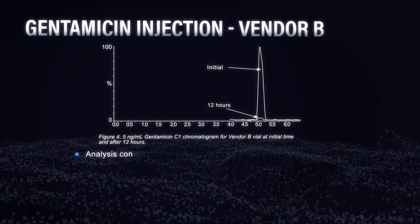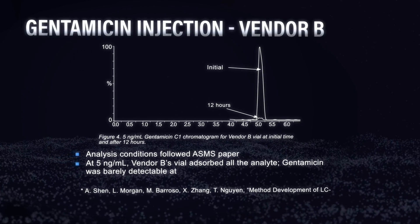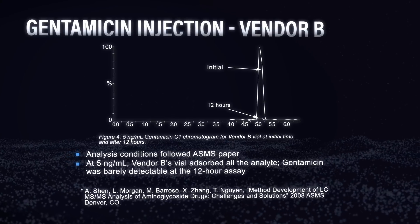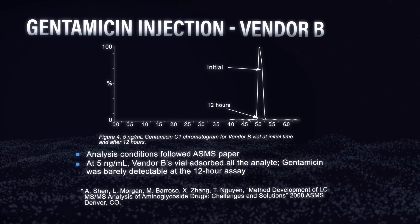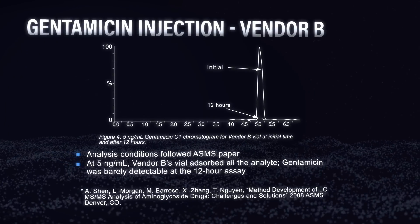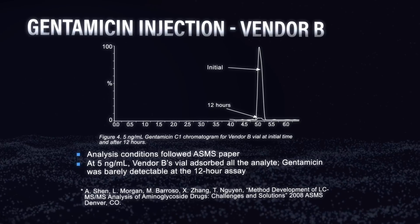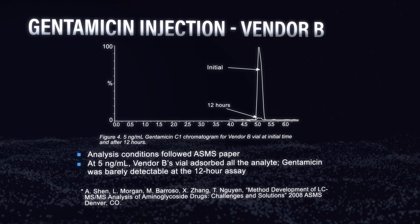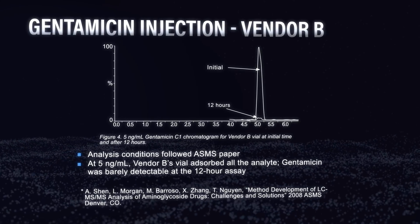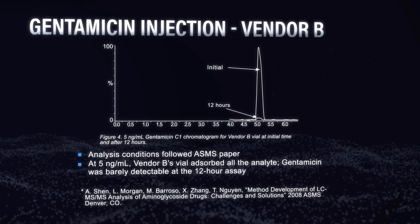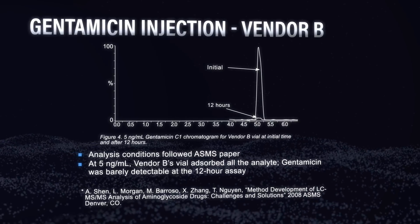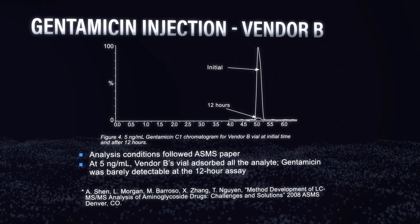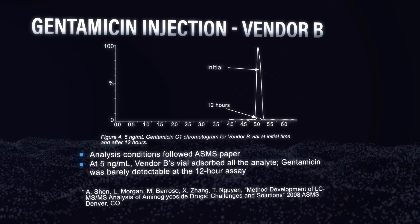Here we can take a look at gentamicin — this is based on a paper we saw at ASMS that we decided to duplicate. The initial injection of gentamicin looks pretty good, but that same vial injected 12 hours later shows we have lost pretty much all of the sample — we can barely see the gentamicin. That particular vial absorbed nearly all of it.